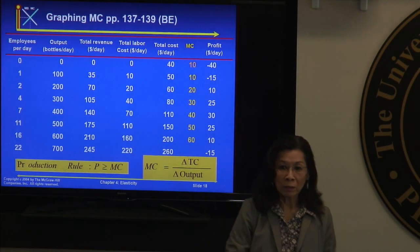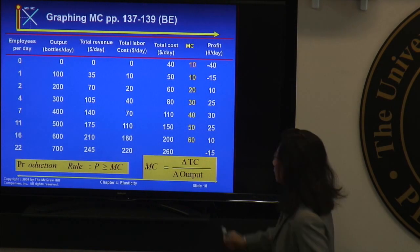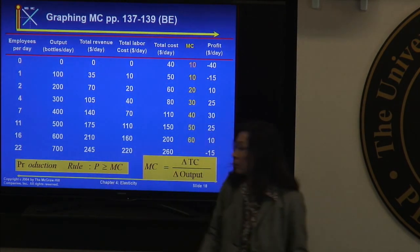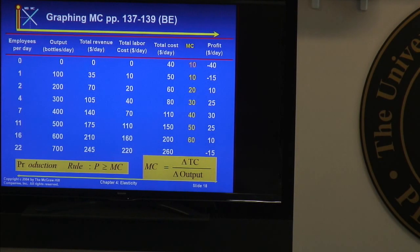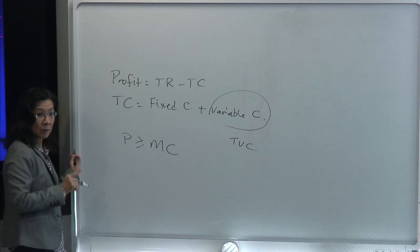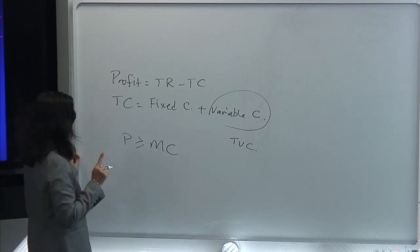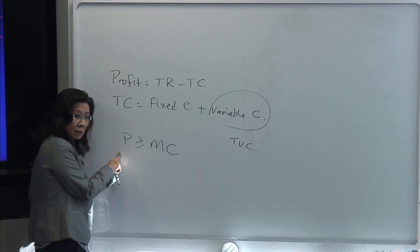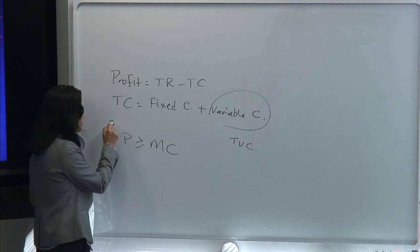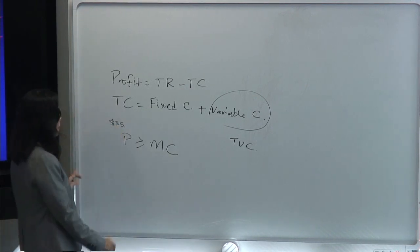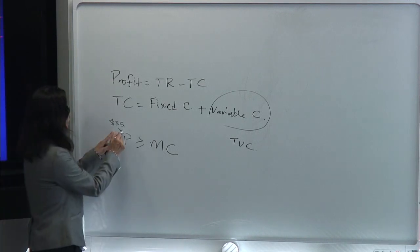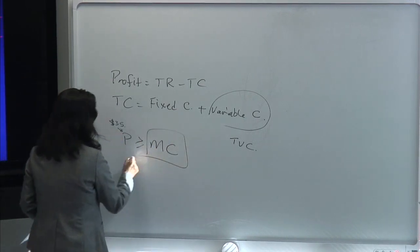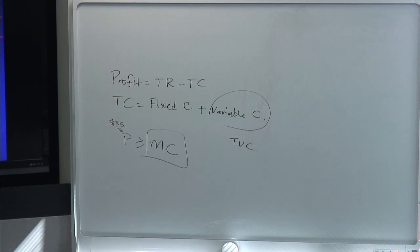The quicker way is to use marginal cost. The production rule says that price must be greater than or equal to marginal cost. So we need to calculate marginal cost. The price is given to you as $35 per 100 units. So the next thing we need to do is calculate the marginal cost — you have to show all your marginal cost.